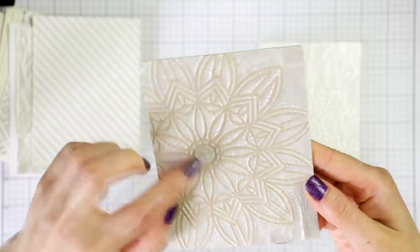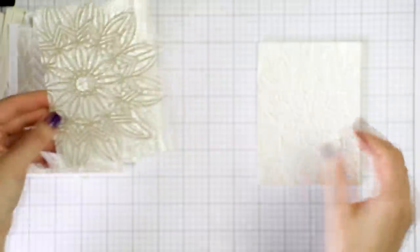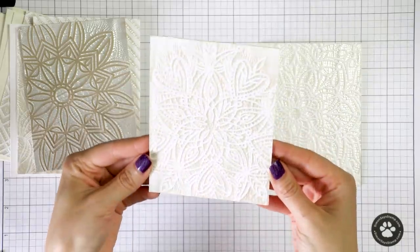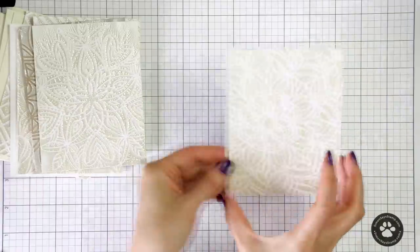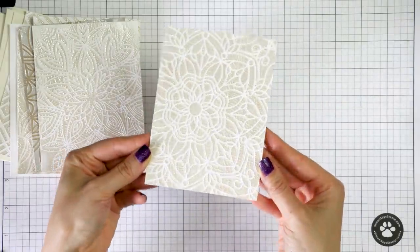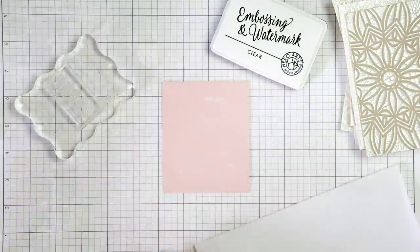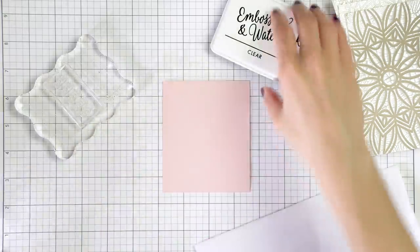All of these were created using stencils from Simon Says Stamp and I have all of the stencil names listed in the video description below. To create cards I adhered my crackled backgrounds to A2 white side-folding card bases using my chipboard-like panels.